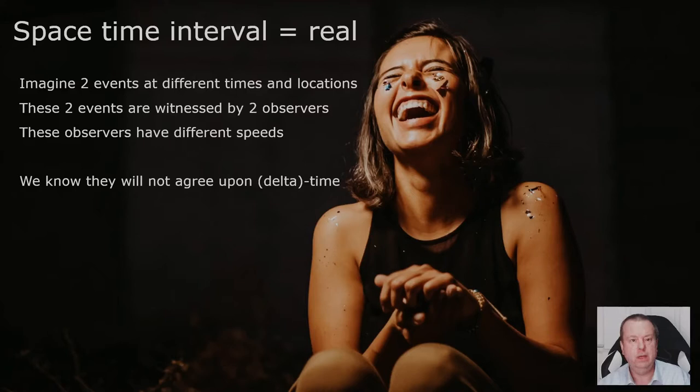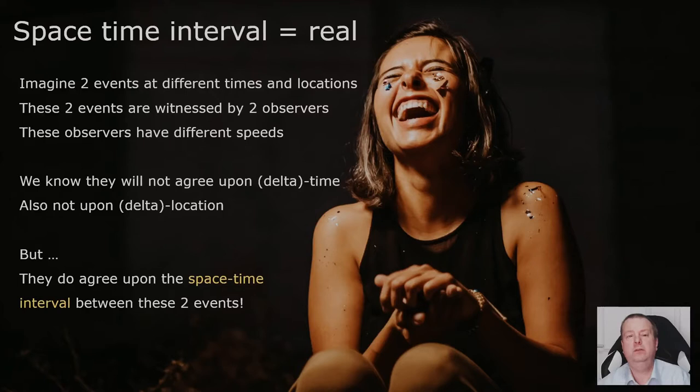So we know that if you only look at time and only look at location, both observers will not agree upon where things are, when they happened, how far apart they are in time or space, but they do agree about the space-time interval between the two events.